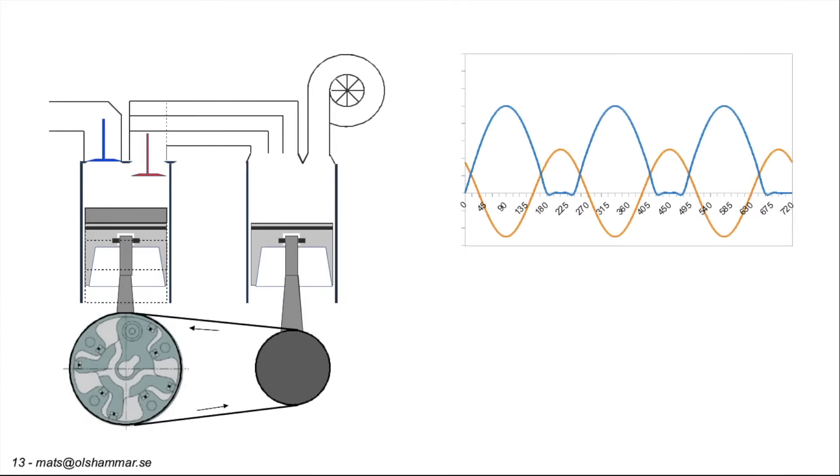If we look at the blue exhaust curve from the combustion cylinders and combine this with the yellow curve from the exhaust cylinder we can see that this together creates a very smooth gas flow to the turbo.